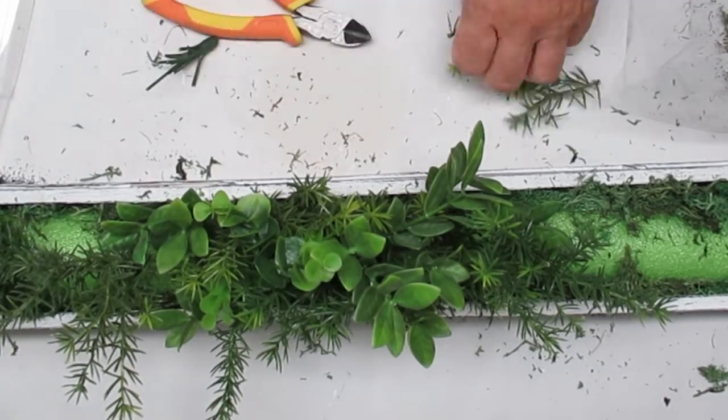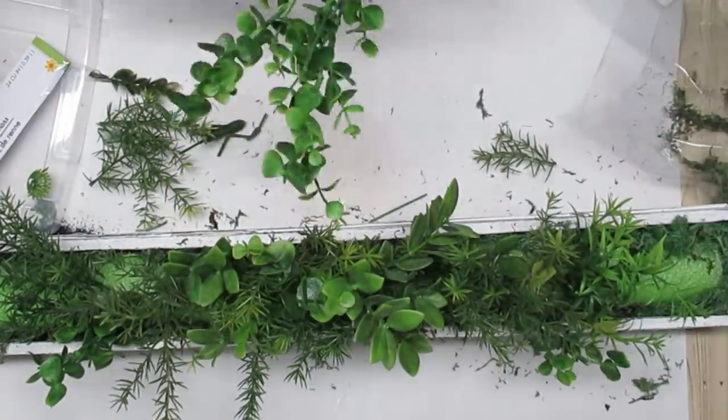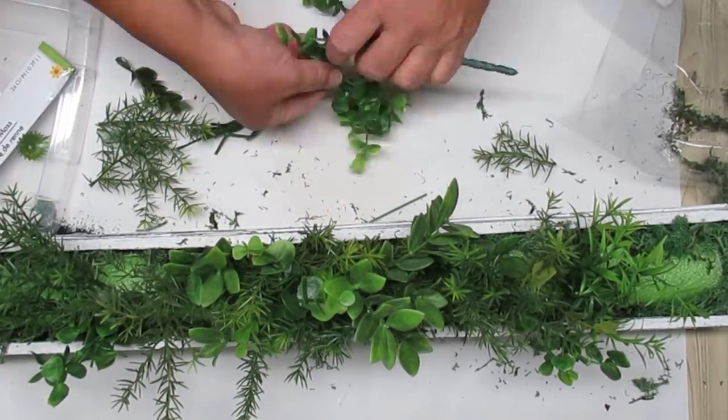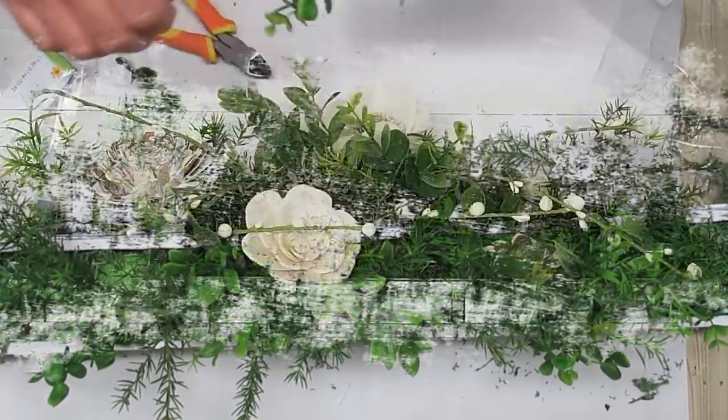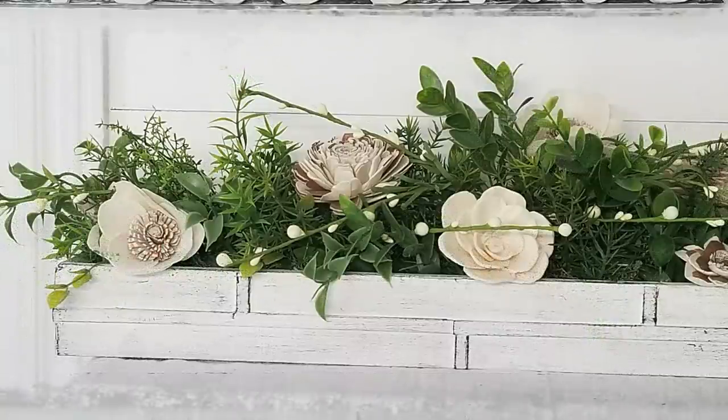I've got some eucalyptus, I've got some asparagus fern, I've got some other things, different colors and then at the end I decided I needed to have some color. I added some sola wood flowers and just pushed them in here and there and I think this turned out absolutely gorgeous.